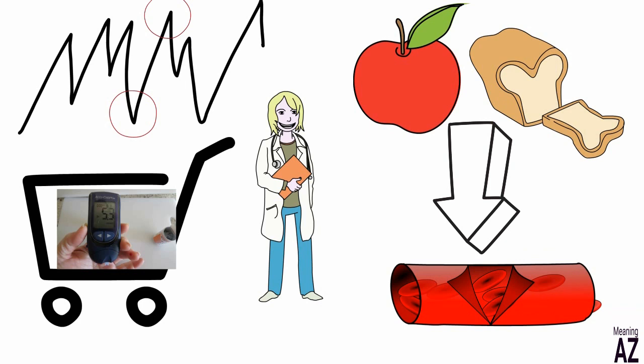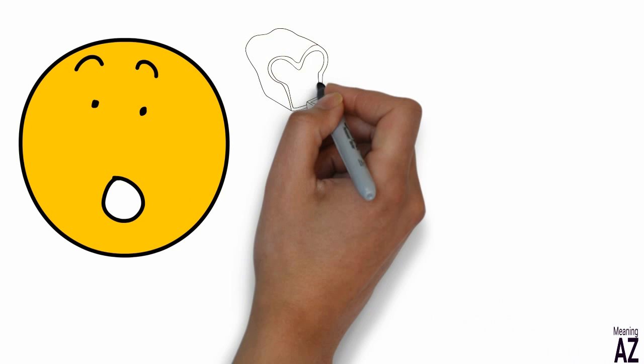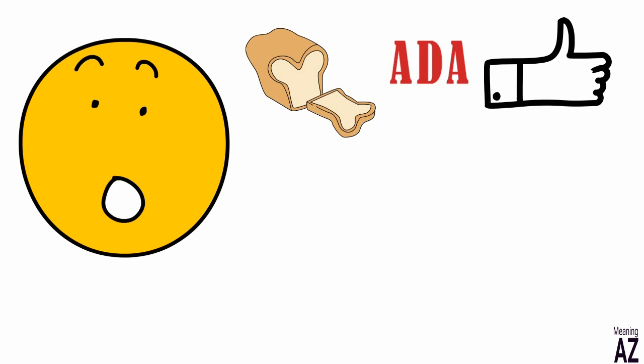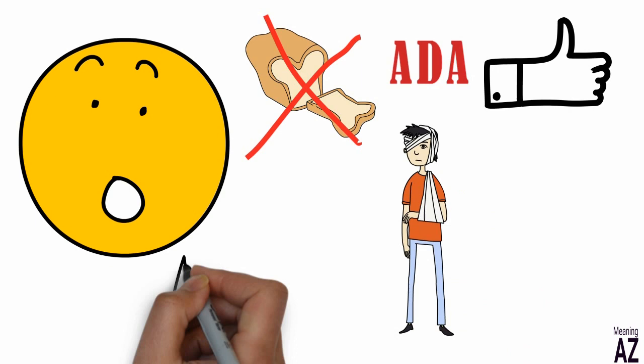What was surprising about this discovery is the fact that the consumption of carbohydrates is recommended by the American Diabetes Association despite its harmful effects. According to Bernstein, the complications of diabetes are caused by high levels of blood sugar and diabetics can avoid them altogether by controlling their carbohydrates.